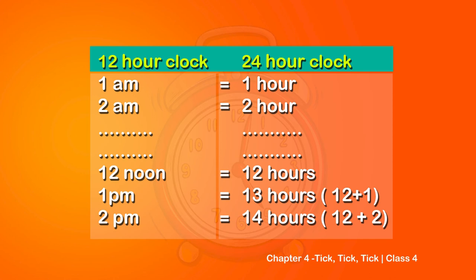So what did we do here? We added 12 to 1 and it became 13. So 13 hours in 24-hour clock is 1 PM in 12-hour clock. Then 2 PM in 12-hour clock will be 14 hours - we did 12 plus 2. It goes on. So to convert time from 12-hour clock to 24-hour clock, we need to add 12 to the time represented in PM. And the time in AM will be the same in both clocks.